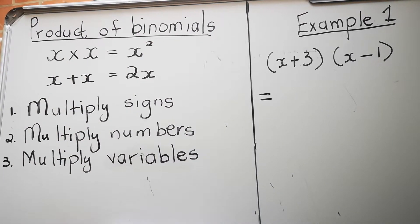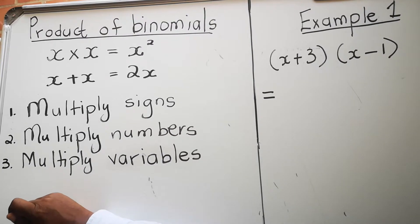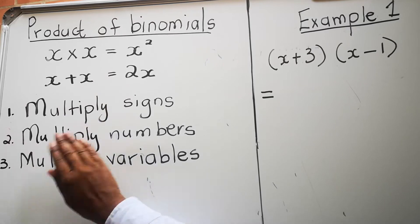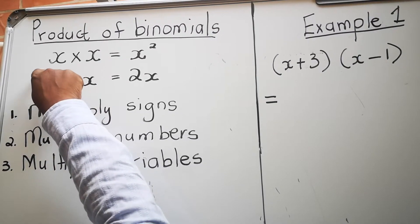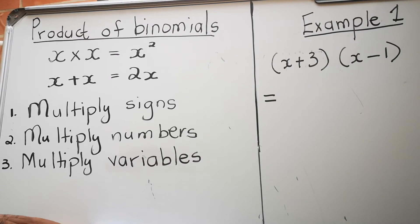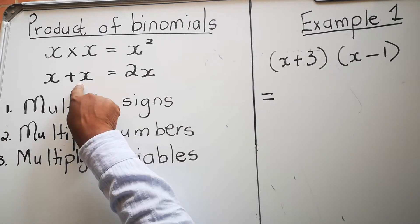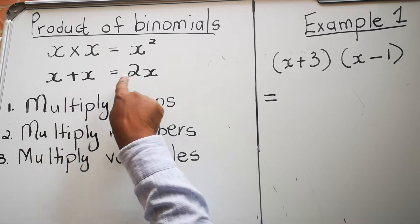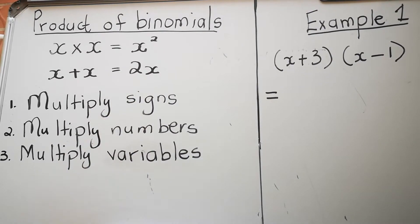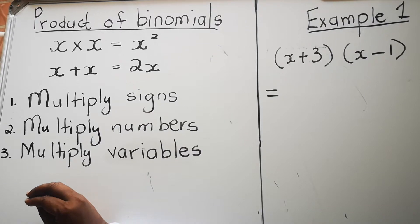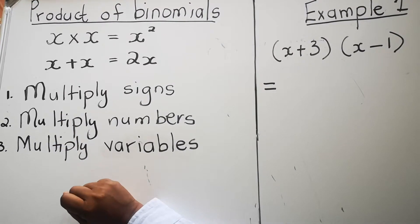When you are adding, you do not use the law of exponents — that law is for multiplying and dividing. So don't do the same thing for addition. For example, x plus x: there's a coefficient of one on each x, so you add one plus one to get two x, because they are common variables. Make sure that when you multiply you follow the rules for multiplying, and when you are adding you follow the rules for adding. Now we start with our lesson — product of binomials.